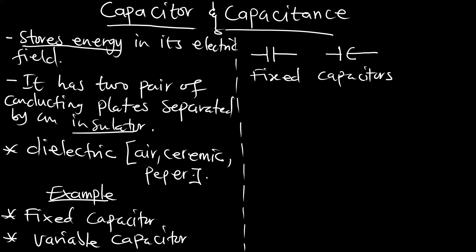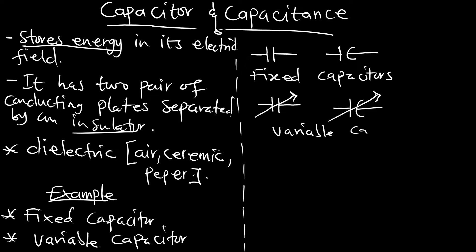Fixed capacitors have a set value — if the capacitance is one, it is one; if it is two, it is two; it cannot be changed. We also have variable capacitors, drawn with an arrow through the symbol, indicating that we can set it to the range that we want.